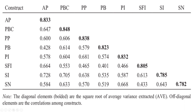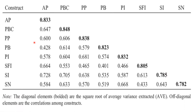You can see all these values — 0.647, 0.600 — must be lesser than the diagonal value, which is the square root of the Average Variance Extracted. All these correlations are below this value.